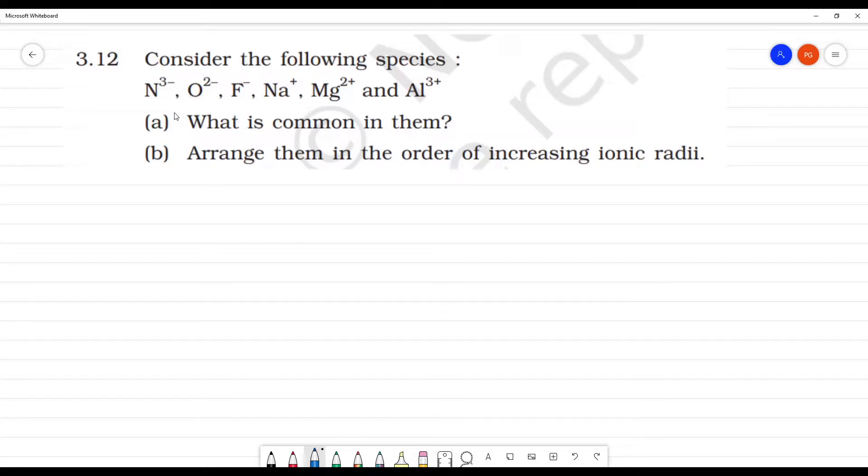Consider the following species: N³⁻, O²⁻, F⁻, Na⁺, Mg²⁺, Al³⁺. Part (a) asks: What is common in them?